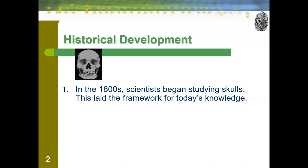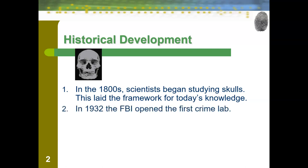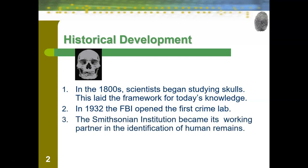In the 1800s, scientists began studying skulls, which laid the framework for today's knowledge. They had interesting thoughts that you could tell about a person's personality based on the bumps on their skull, but they did discover some things we still use today. In 1932, the FBI opened the first crime lab. They saw a need for analyzing skeletal remains, so the Smithsonian Institute stepped up and became its working partner in the identification of human remains.